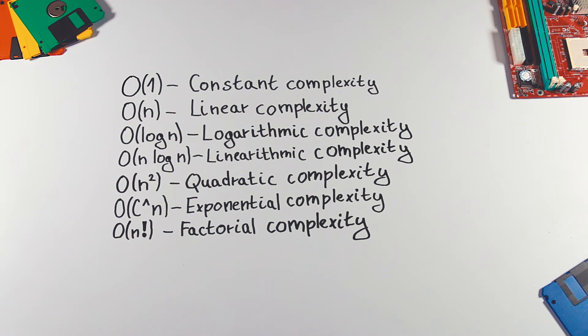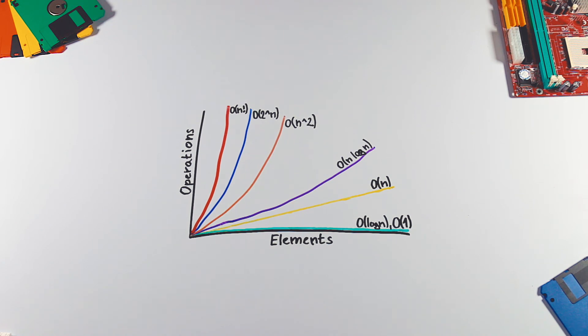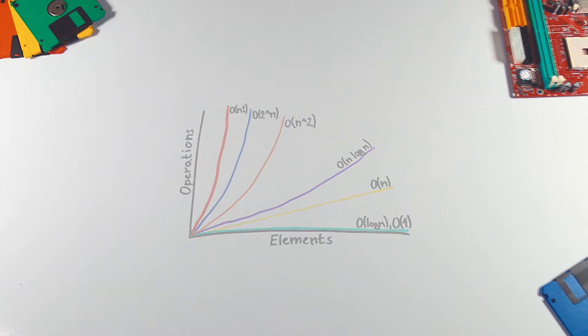Those complexities can be visualized with the following graph. As you can see, with complexities like Quadratic, Exponential or Factorial, the requirements for time or space can rise quite rapidly.